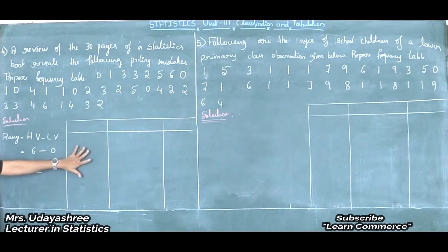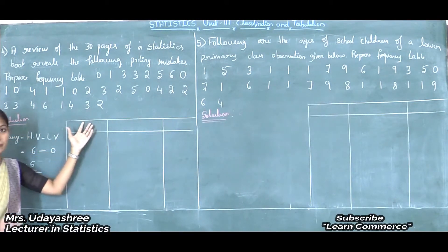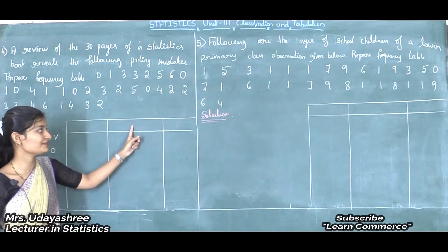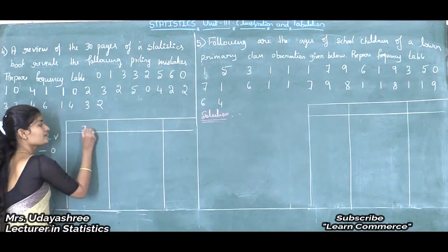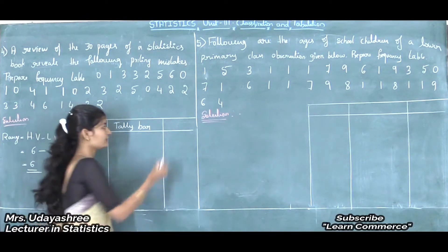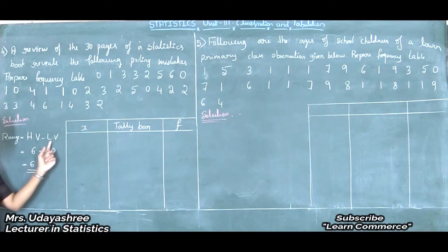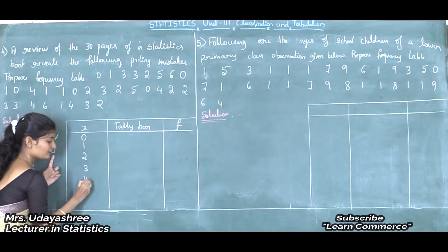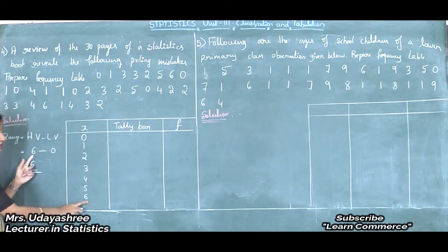Therefore, we can prepare a discrete frequency distribution table. There are three columns: the first column is variable, denoted by X; the second column is tally bar; and the last column is frequency, denoted by F. Since the range is 6 and the lowest value is 0, I will start the variable column from 0 and go up to 6, as 6 is the highest value.